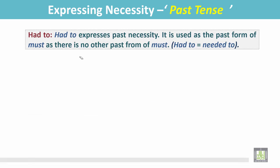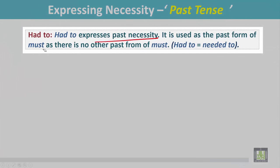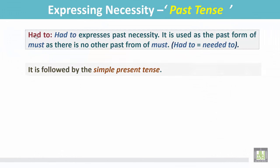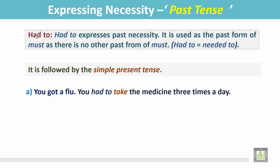Had to expresses past necessity. It is used as the past form of must, as there is no other past form of must. It means needed to, and is followed by the simple present tense. Example: You got a flu — you had to take the medicine three times a day. This indicates that it happened in the past.